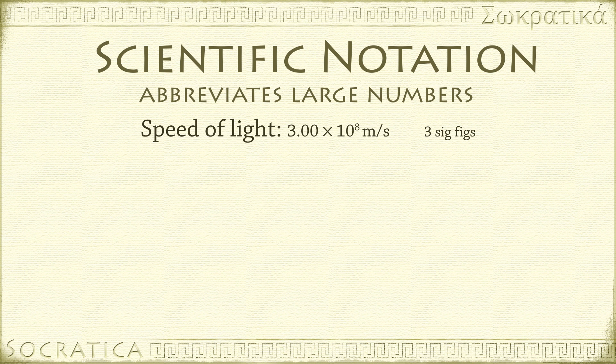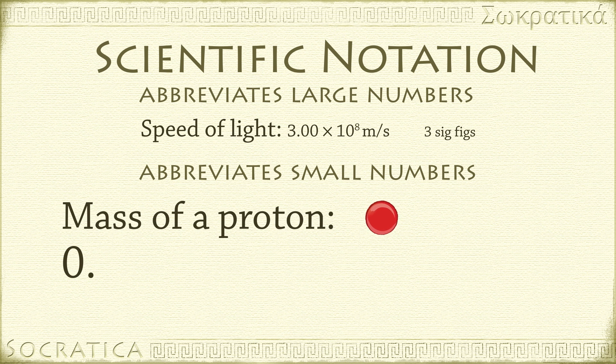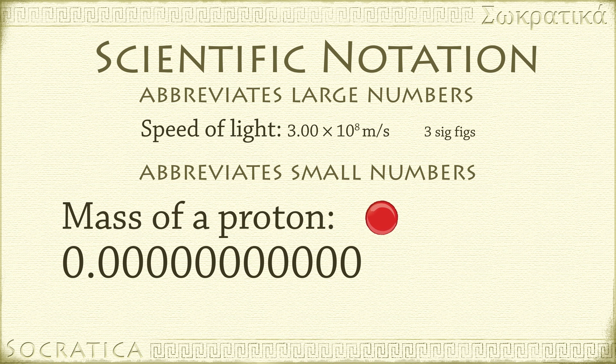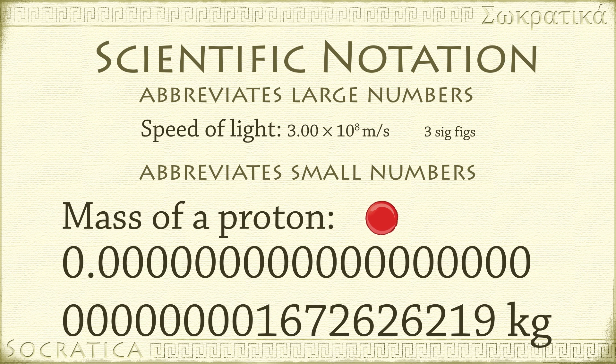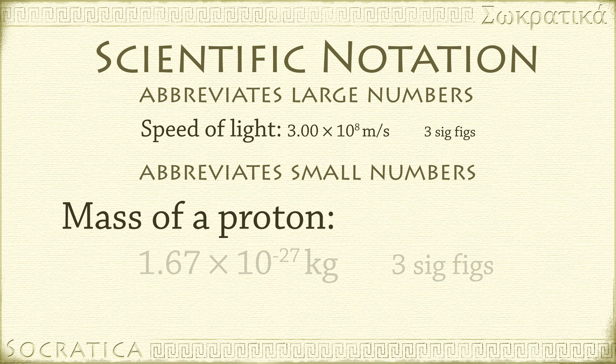We can also use scientific notation to abbreviate very small numbers. For example, the mass of a proton is 0.0000000000000000000000001672626219 kilograms. Imagine if you had to write this out every time you did a problem involving atomic mass. You'd waste so much paper. It's so much faster and easier to write this number in scientific notation. With 3 sig figs, it's 1.67 times 10 to the negative 27 kilograms.